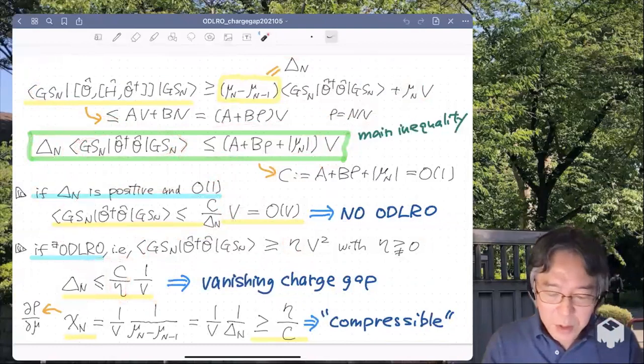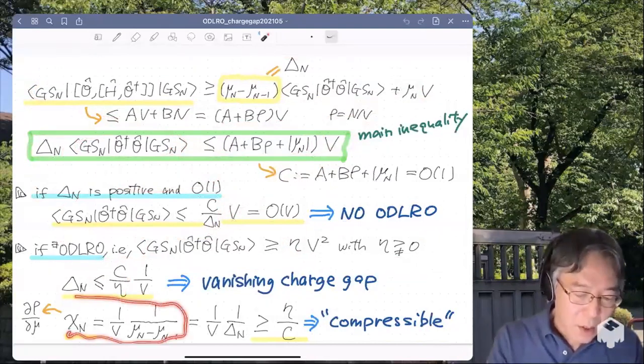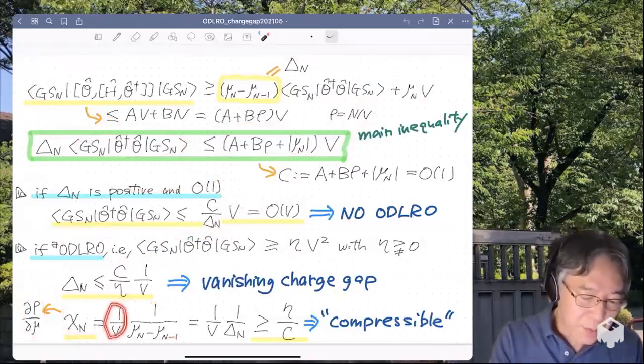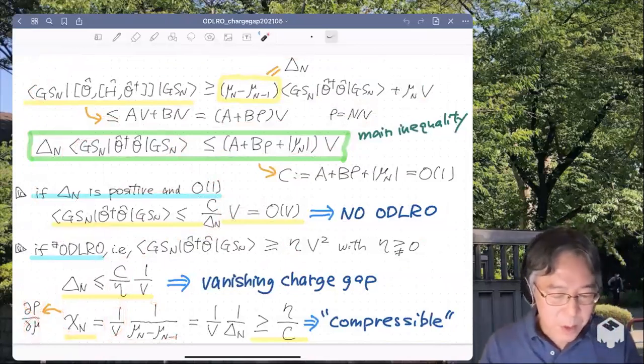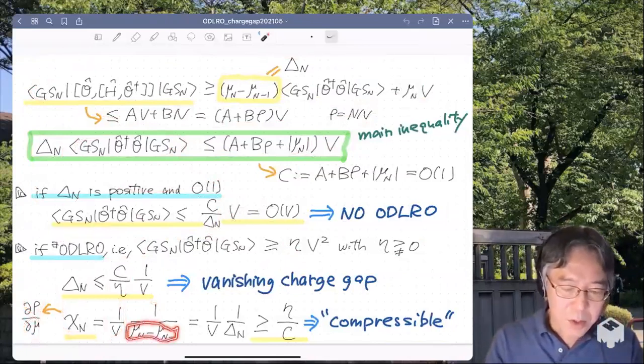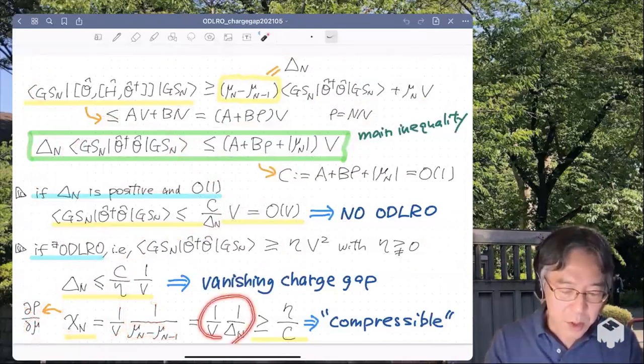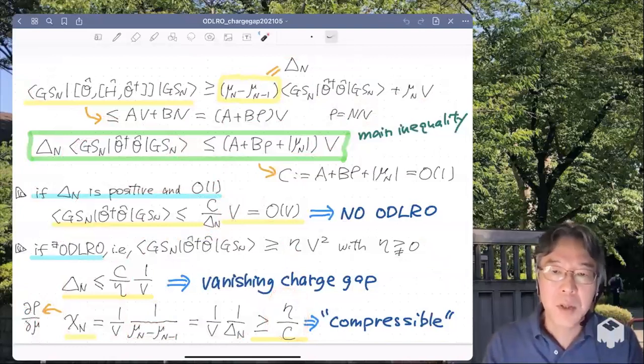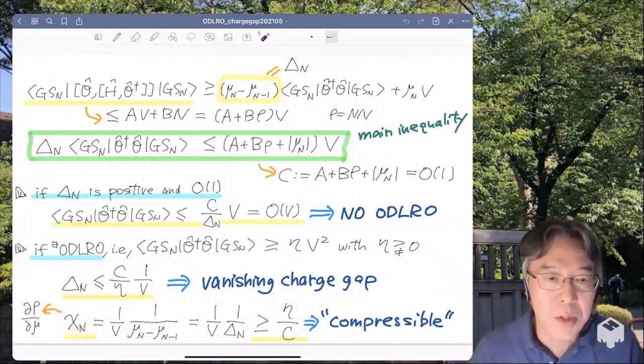Now I look at this compressibility business. So let me define chi_N, the charge susceptibility, this way. And I say that this roughly corresponds, this basically corresponds to this d rho d mu. Why? 1 over V is basically d rho. And mu minus mu is, of course, corresponds to d mu. And now, recalling that mu minus mu is nothing but delta. So this is written this way. So by plugging in this inequality, I think V cancels out. And we see that chi_N is lower bounded by eta over C, positive constant of order one. So I conclude that charge susceptibility is strictly positive and the ground state is compressible.